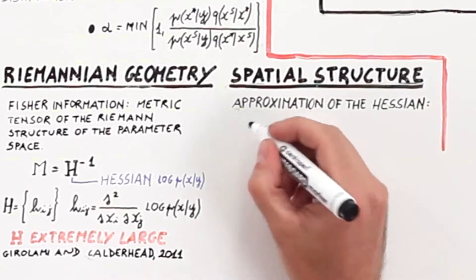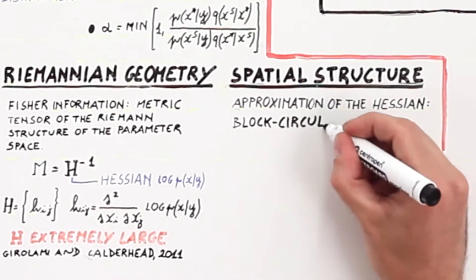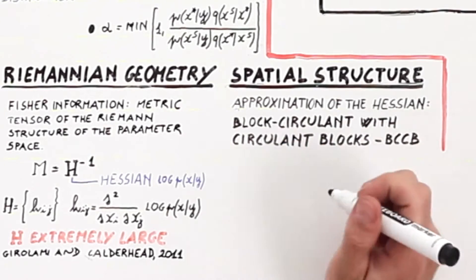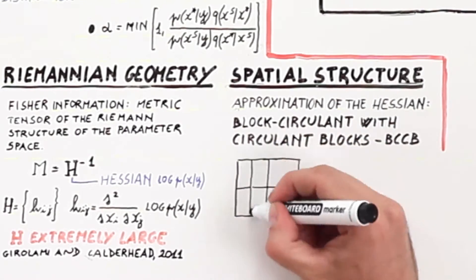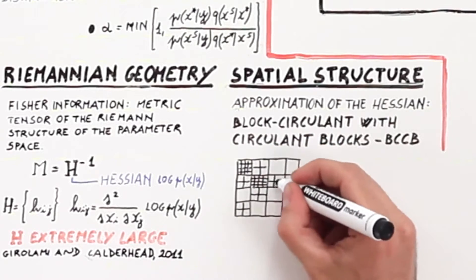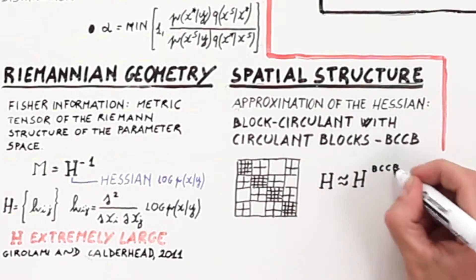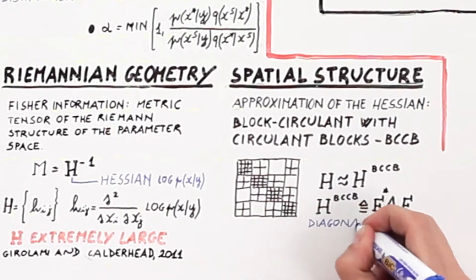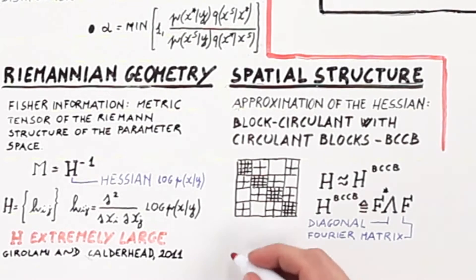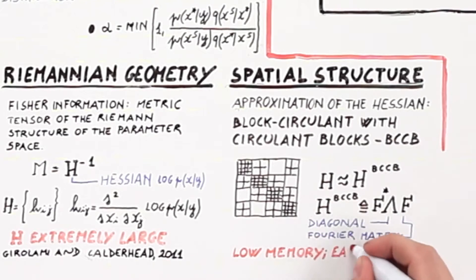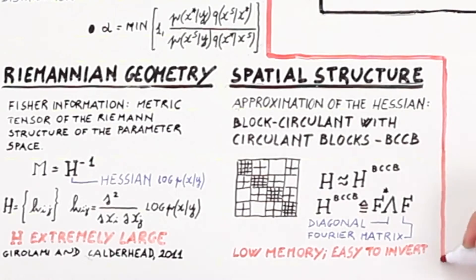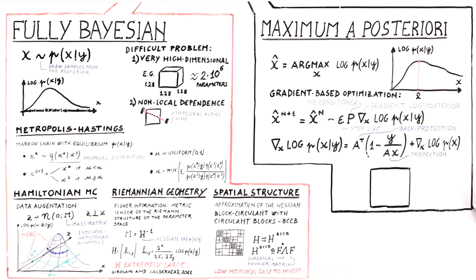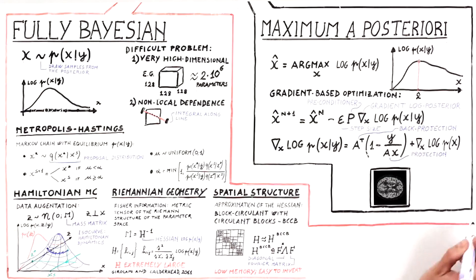In tomographic imaging, the Fisher information matrix is too large to be evaluated numerically and stored in memory. However, the spatial organization of the parameters allows for approximations. Assuming periodic boundary conditions, the Fisher information matrix is well approximated by a block circulant matrix with circular blocks. The Fourier diagonalization properties of block circulant matrices enable efficient inversion and a low memory footprint.